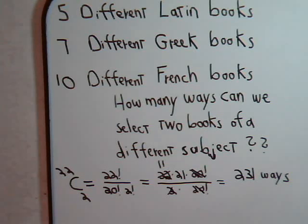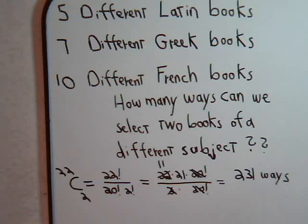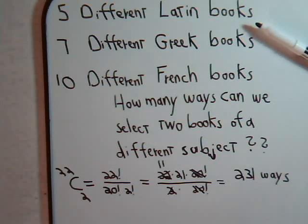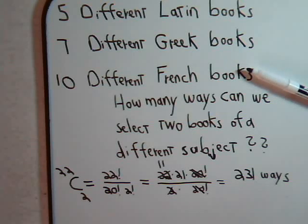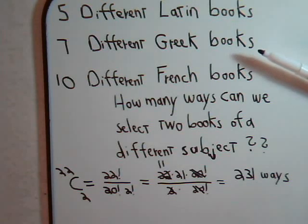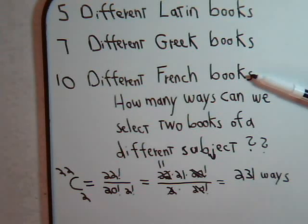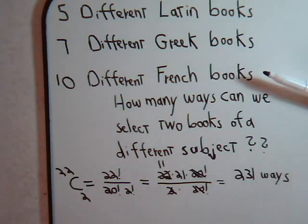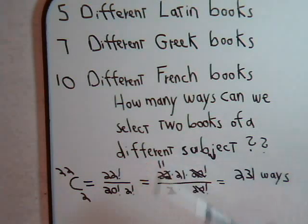But those two books might be the same subject — we might have two different Greek books, or two different French books selected. The question we want to answer is how many ways can we select two books of a different subject. We can find the total number of ways to select two Latin books, two Greek books, and two French books, then subtract that figure from 231 to get our answer.